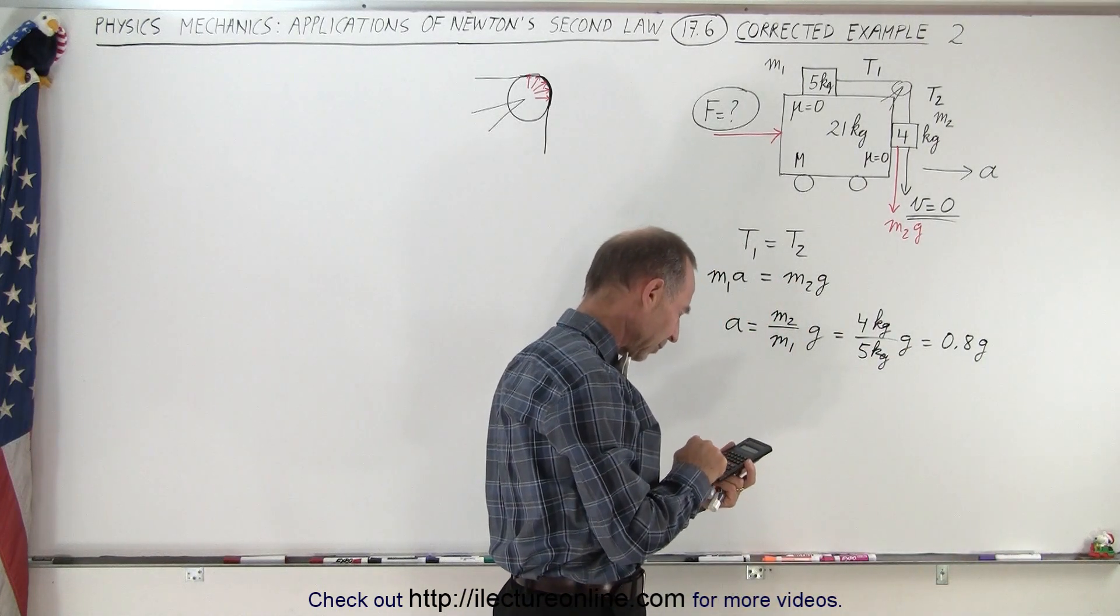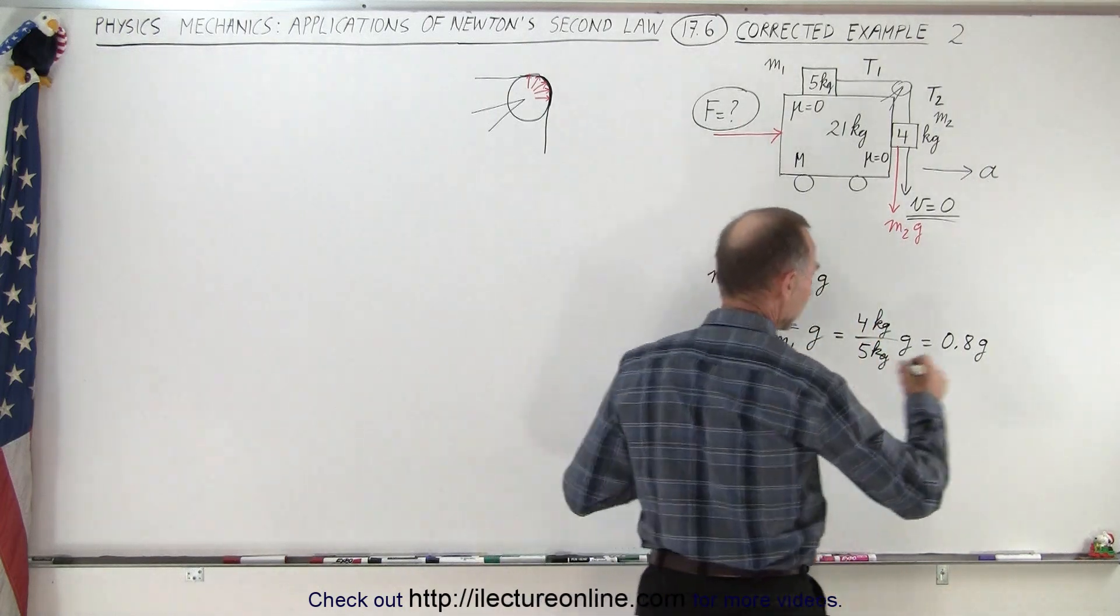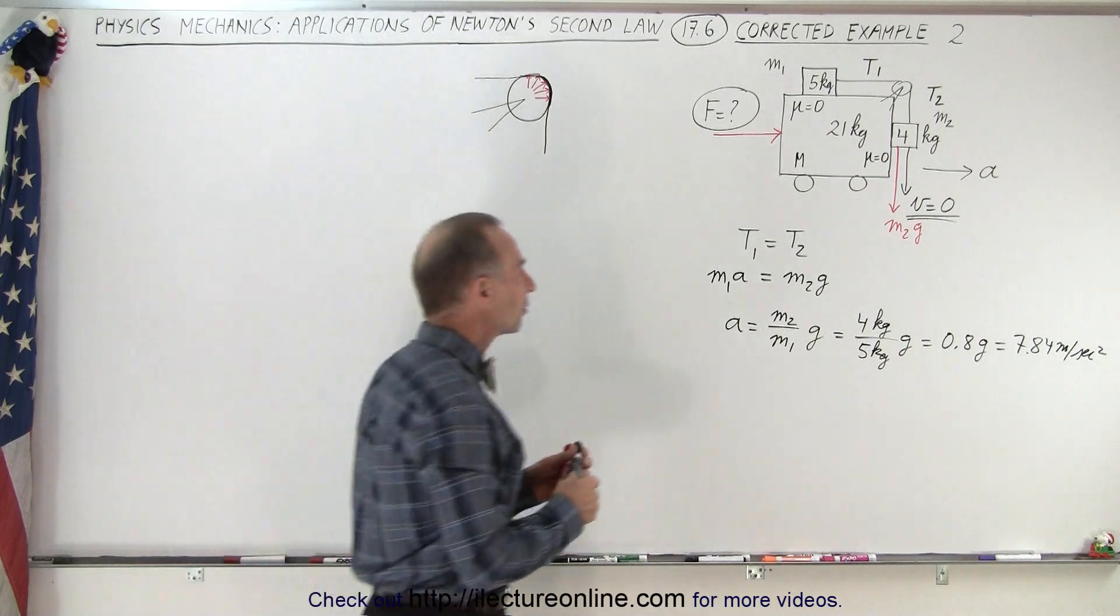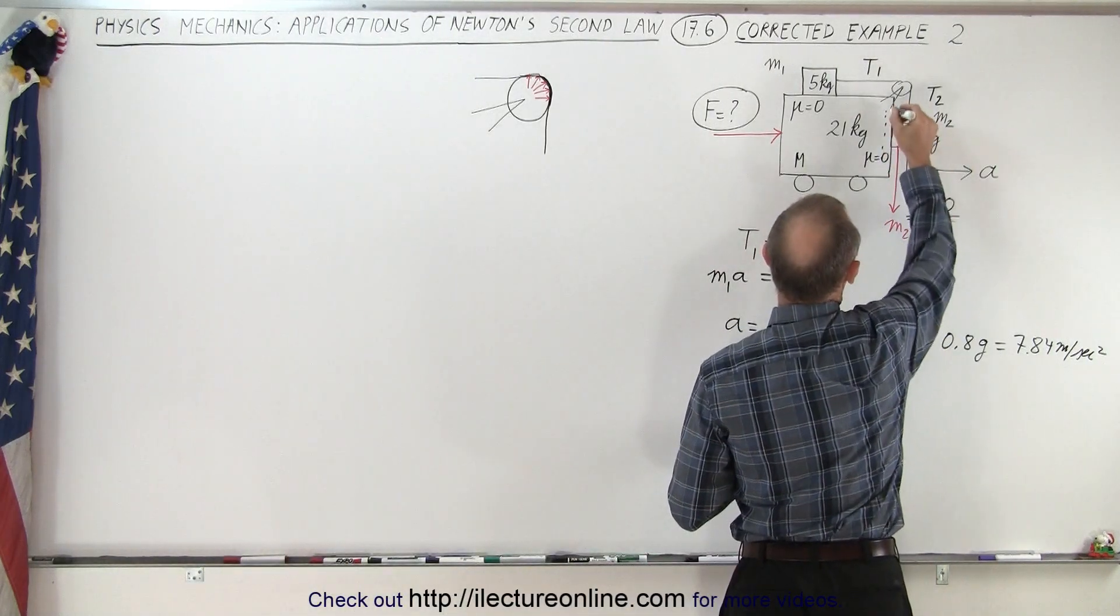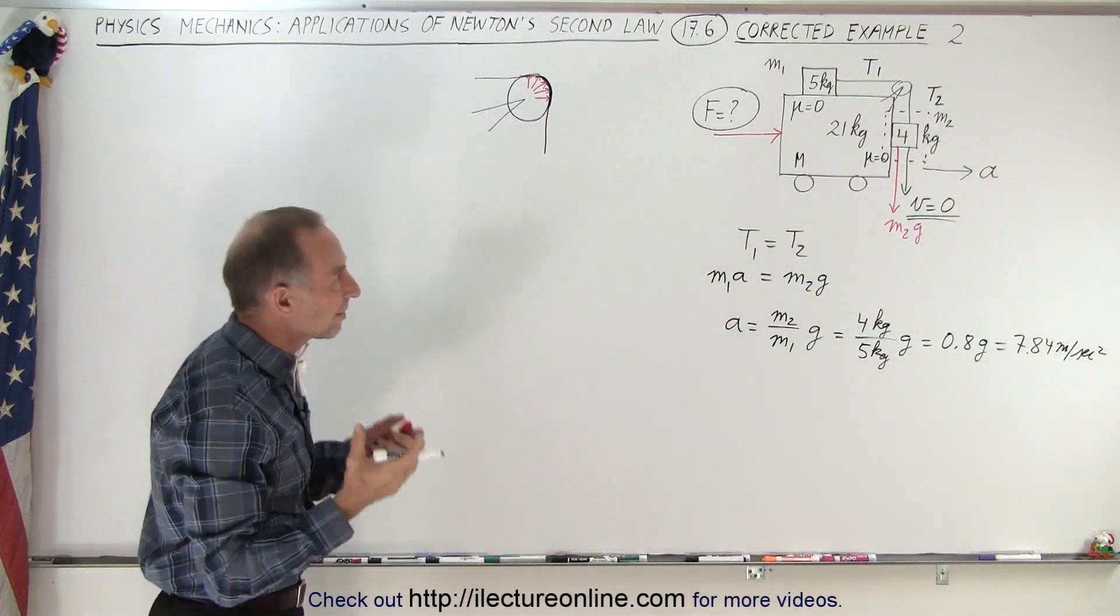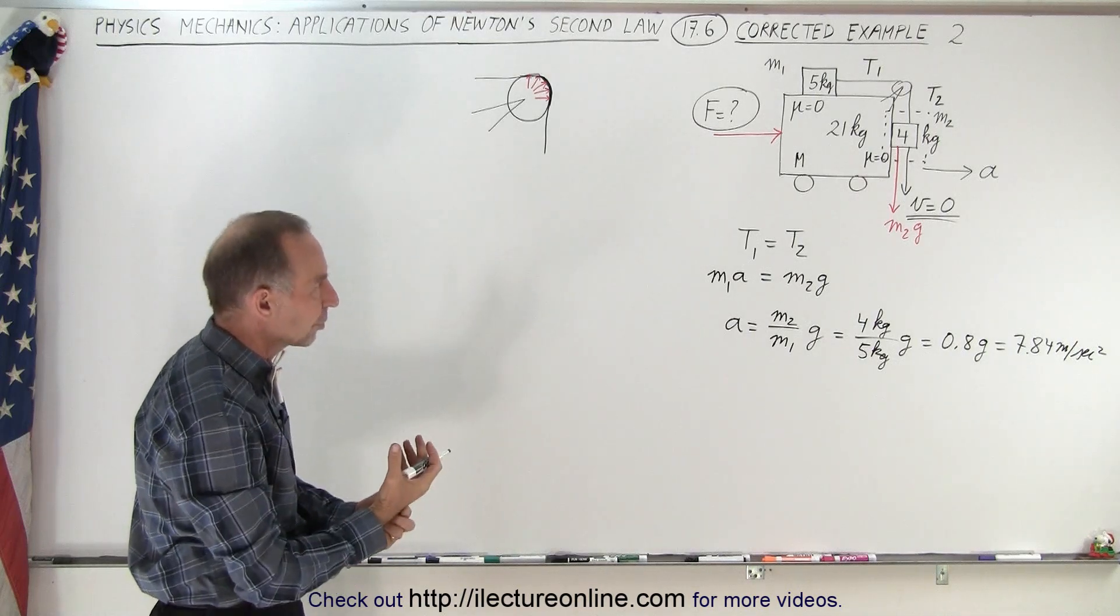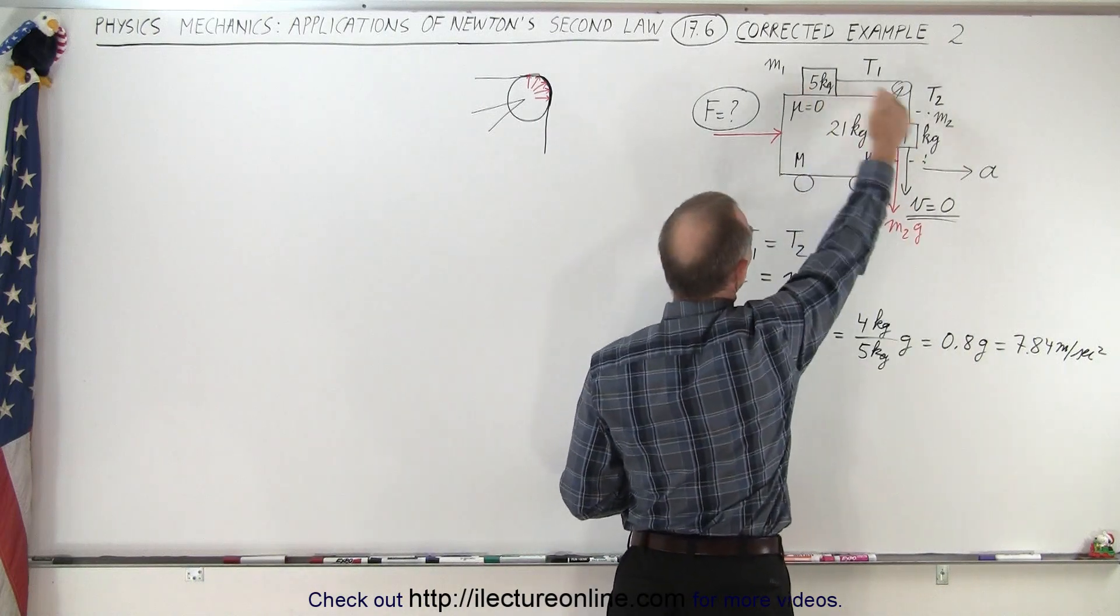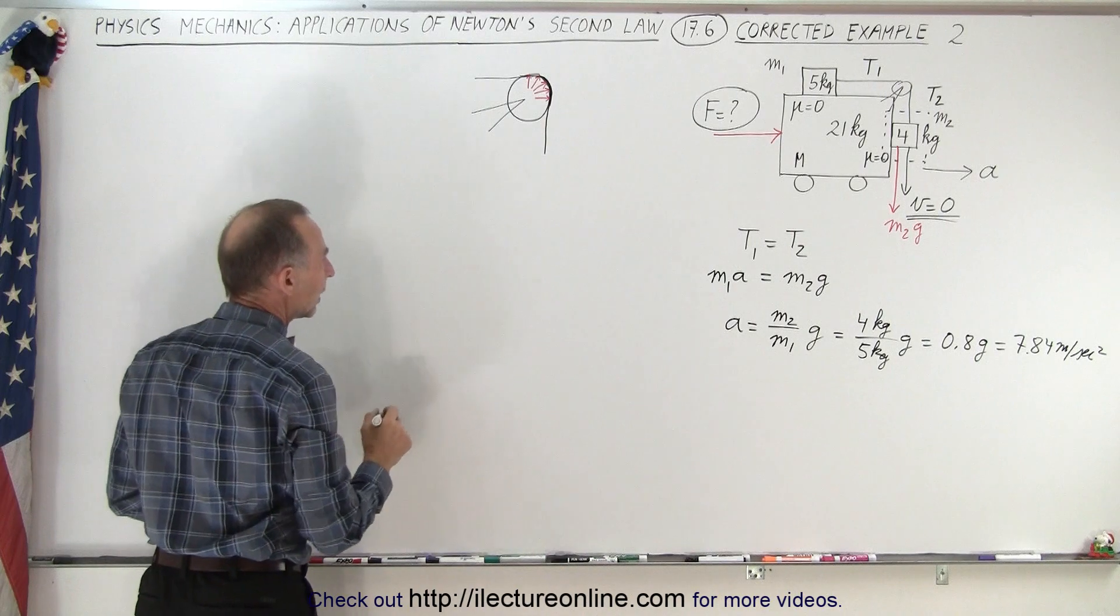So we end up with 0.8g, and that equals 9.8 times 0.8, we get 7.84. Now notice, if we think of this as a free body diagram, there's different ways of looking at it. So here we can draw a little free body diagram. The question would be, why is that block not going down? The acceleration due to gravity will cause this mass to go downward and would eventually pull this mass forward.